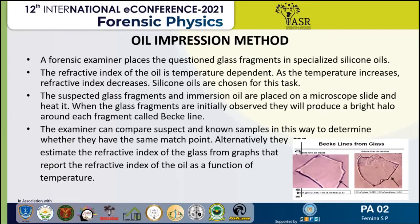An easy way to vary the refractive index of the immersion oil is to heat it. The suspected glass fragments and the immersion oil are placed on a microscopic slide, which is then inserted into a hot stage microscope. When the glass fragments are initially observed through the microscope, they produce a bright halo around each fragment known as the Becke line. At the point where the refractive index of the oil and the glass fragment are the same, the examiner is no longer able to see the glass fragments immersed in the oil. The examiner can compare suspect and known samples this way to determine whether they have the same match point. The refractive index of the glass is read from graphs that report the refractive index of the oil as a function of temperature.